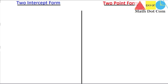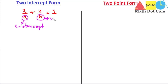The standard form of the two-intercept form is x divided by a plus y divided by b equals to 1. This is the standard form of the two-intercept form of the linear equation. Now what does this equation mean? Here, a is the x-intercept and b is the y-intercept, so we have two intercepts in this form.